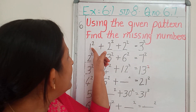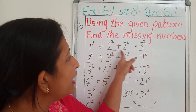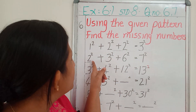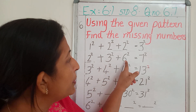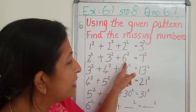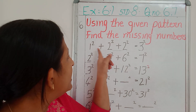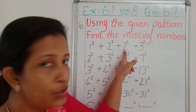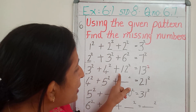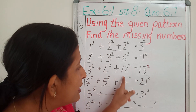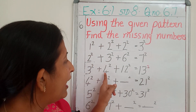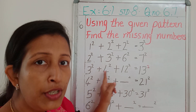So, see: 1 square plus 2 square equals 2 square itself. 2 square plus 3 square equals 6 square. That means 2 into 3 is 6. Here, 1 into 2 is 2. Here, 3 square plus 4 square plus 12 square — 12 we got by multiplying 3 and 4. 3 into 4 is 12.